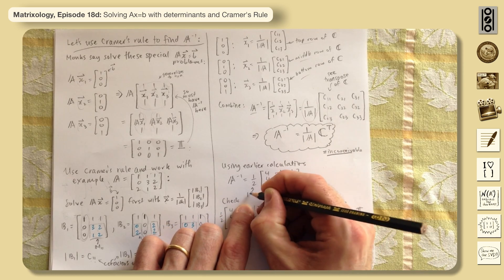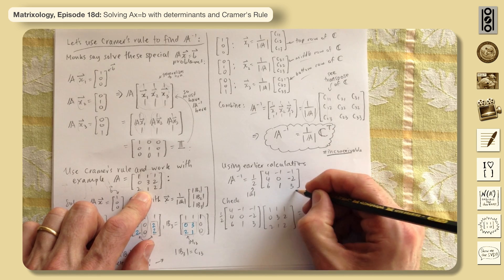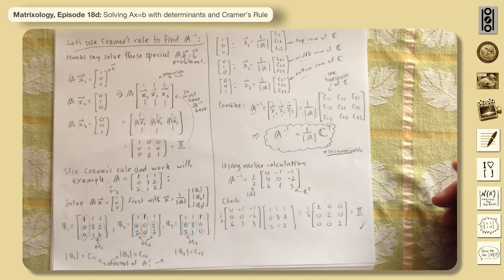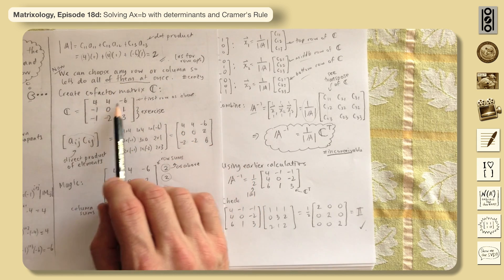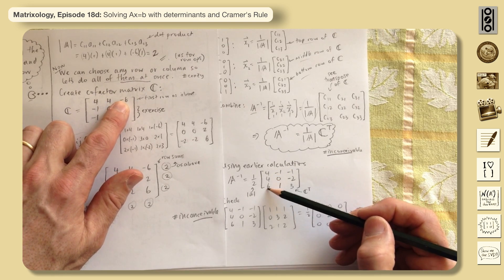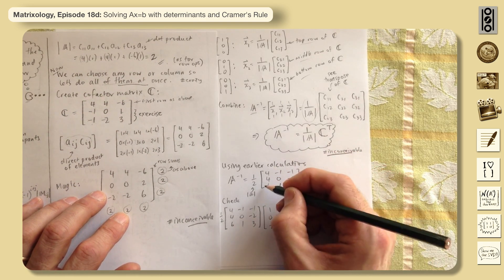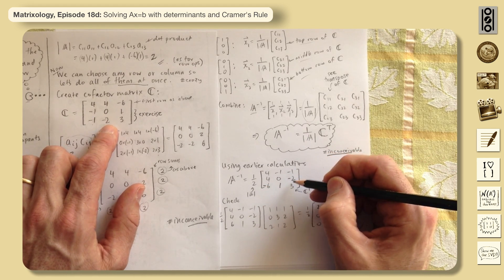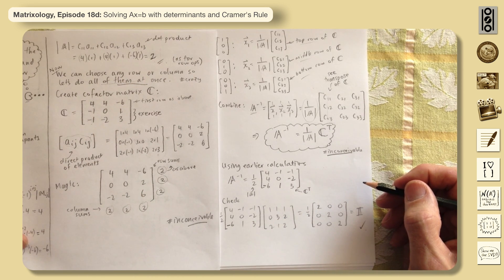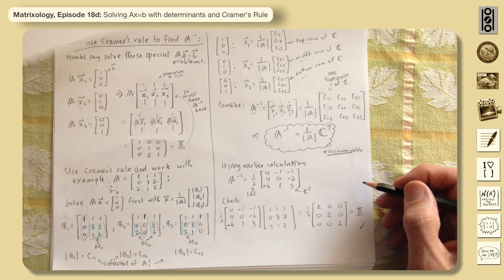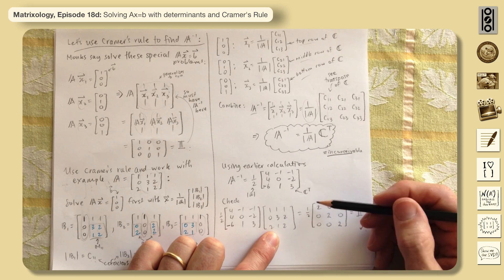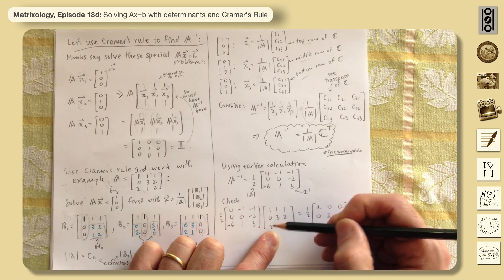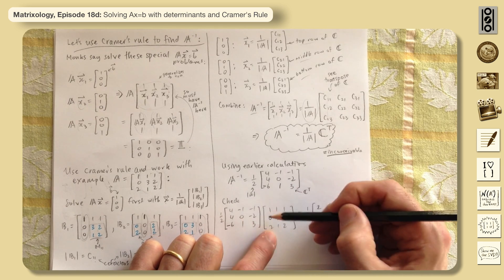We can verify this with our matrix. We know det(A) = 2, and we have the cofactor matrix. Taking its transpose gives us the matrix to work with. Let's check: the first row dotted with the first column of A — we get 4, 0, minus 2, which is 2.